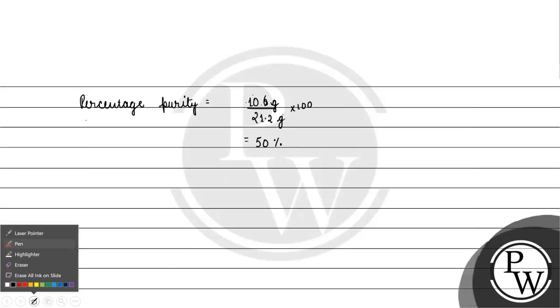If we have to calculate percentage purity, then what will it be? It will be mass of Na2CO3, which is 10.6 gram, by the sample mass given, 21.2 gram into 100, this will come out to be 50 percent.